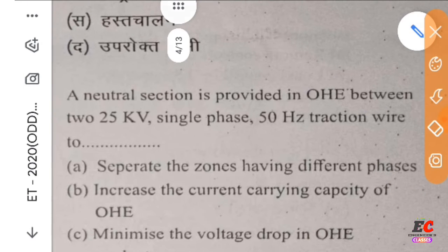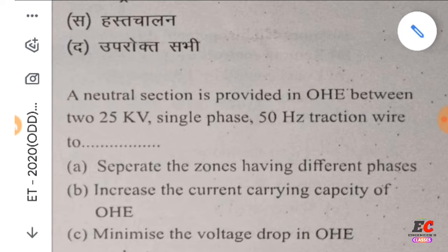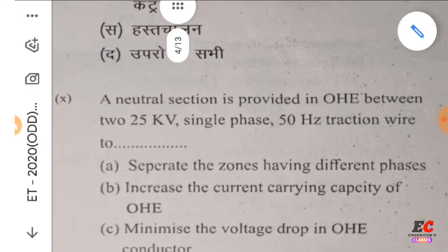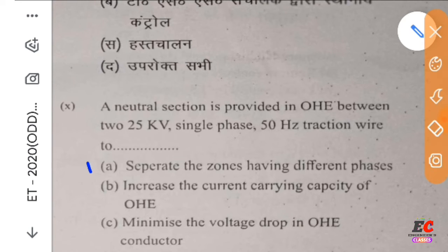A neutral section is provided in OHE between two 25kV single phase AC traction systems to separate the zones having different phases. The right option is: separate the zones having different phases.